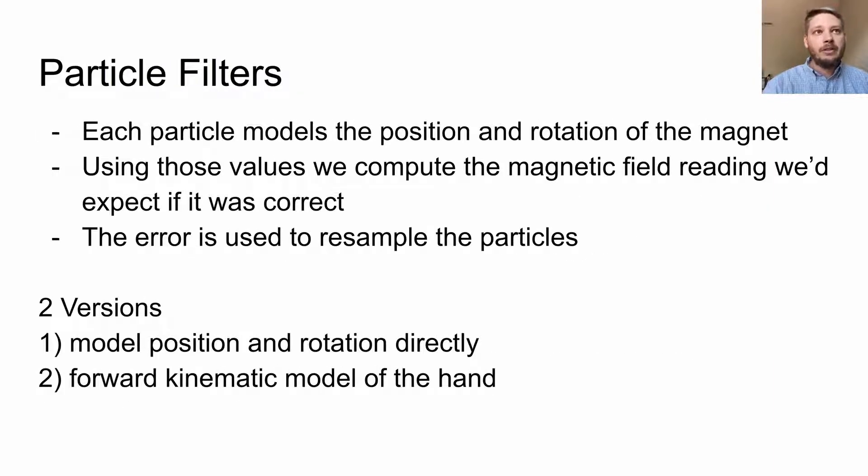In particular, we use particle filters. Each particle models the position and rotation of the magnet. We use those values to compute the magnetic field reading we'd expect if it was correct through a forward direction. We compare that to the actual magnetic field reading, which gives us an error.